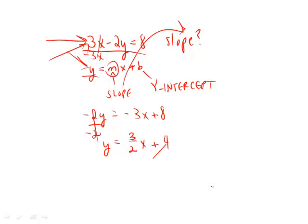We don't care about what the y-intercept is. We simply care about what m is. m is the number times x. In this case, that number is 3 halves, which is answer choice b.